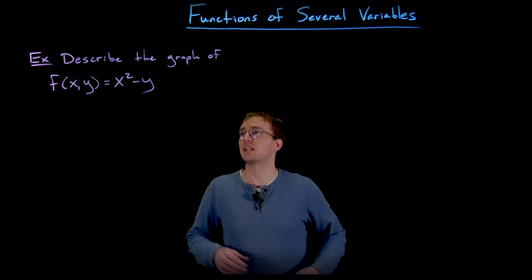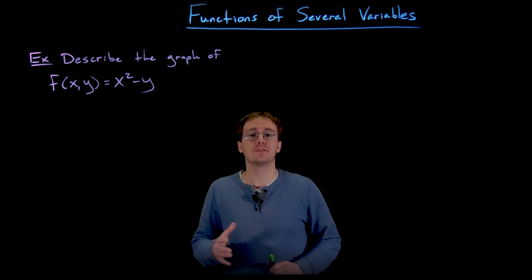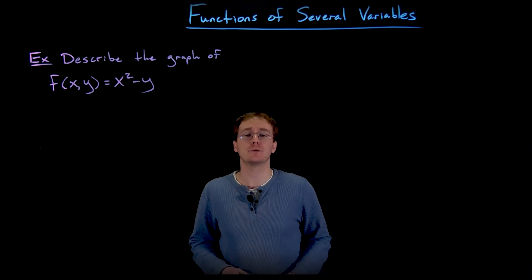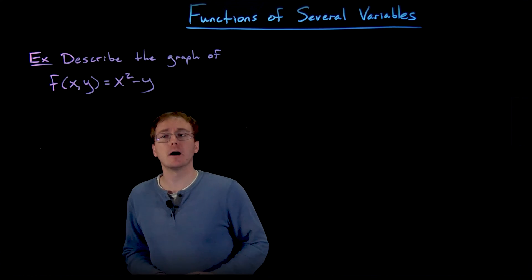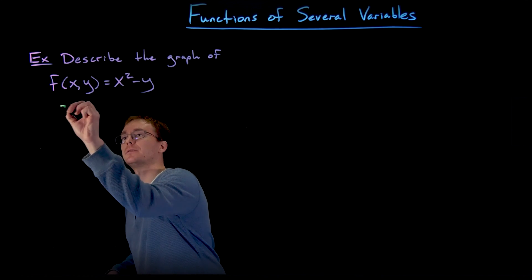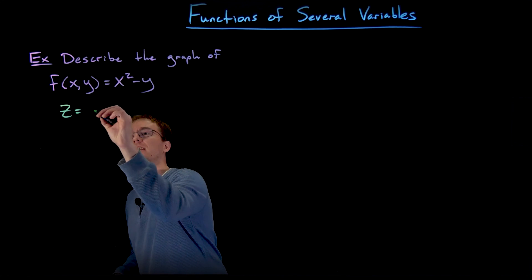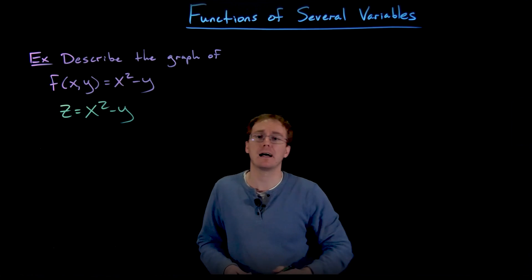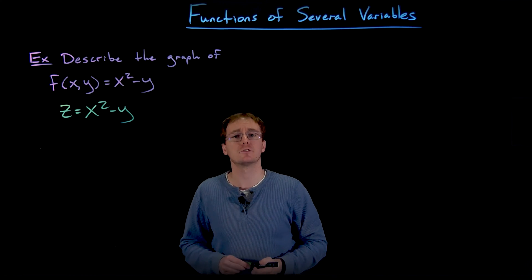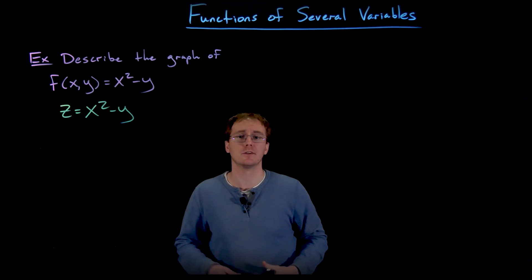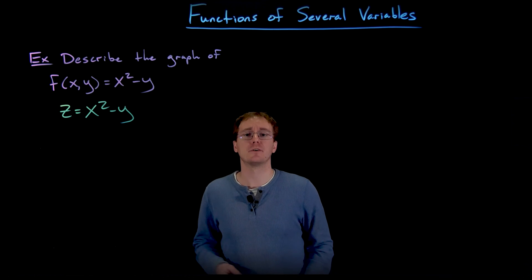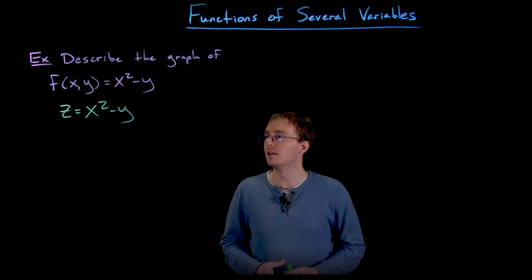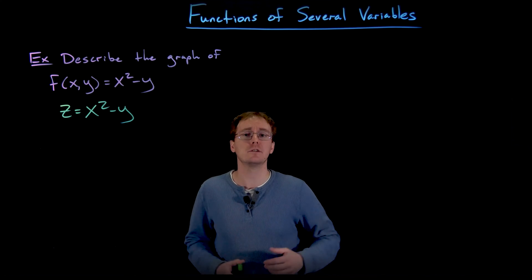Hello everyone, welcome back. In this example we're asked to describe the graph of the two-variable function given by f(x, y) equals x squared minus y. We can rewrite this as z equals x squared minus y, and hope to recognize it as a quadric surface, a plane, or a cylinder — but I don't think we immediately recognize this from our list of common functions, so we'll treat it as a totally new function.